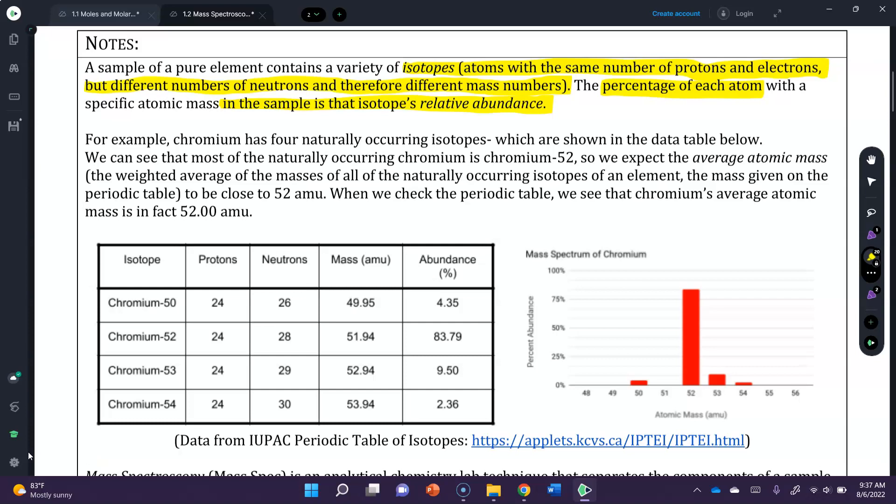So for example, chromium has four naturally occurring isotopes, which are shown in the data table below. We can see that most of the naturally occurring chromium is chromium-52. So we can expect that the average atomic mass, the weighted mass average of all the naturally occurring isotopes of the element, the mass given on periodic table to be close to 52 amu.